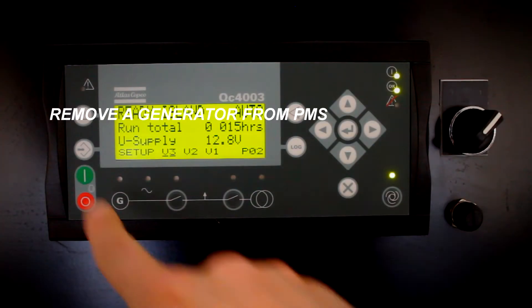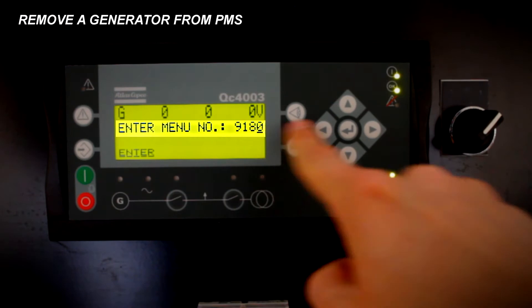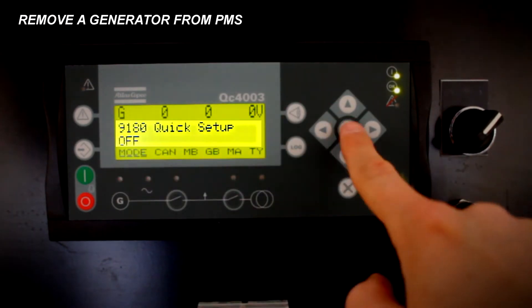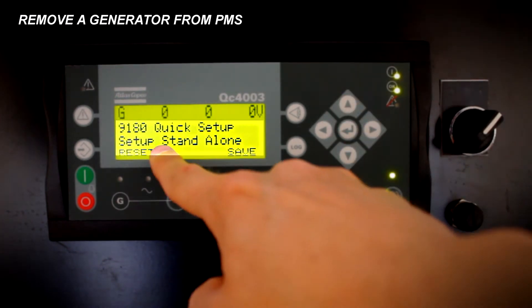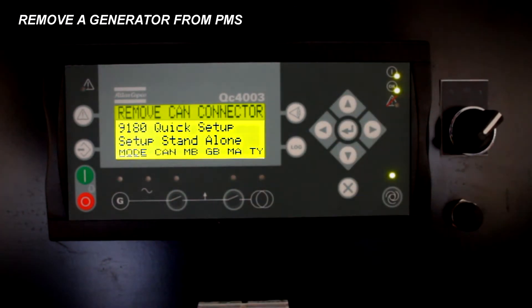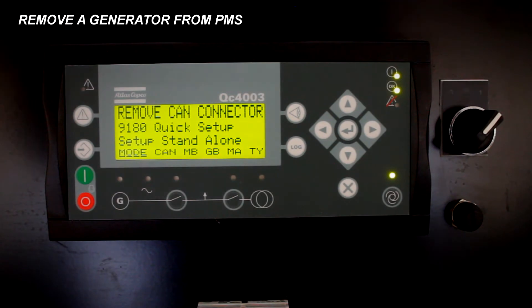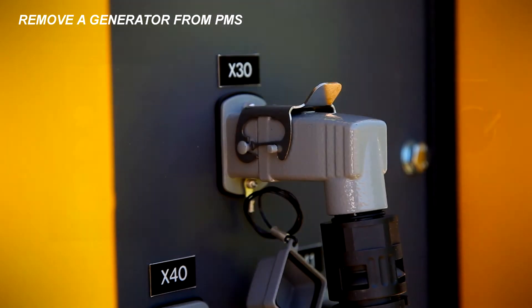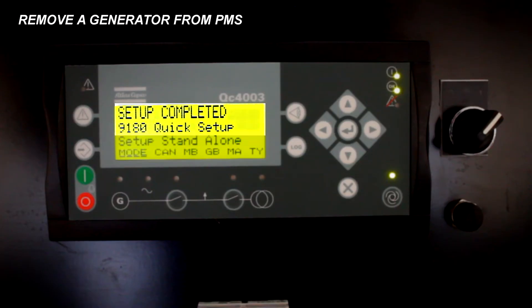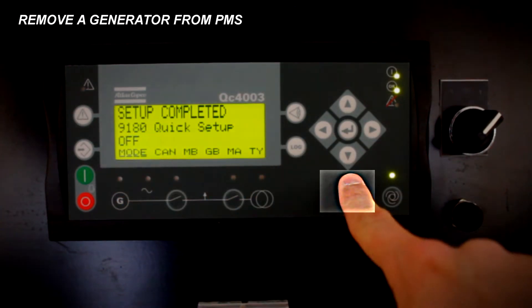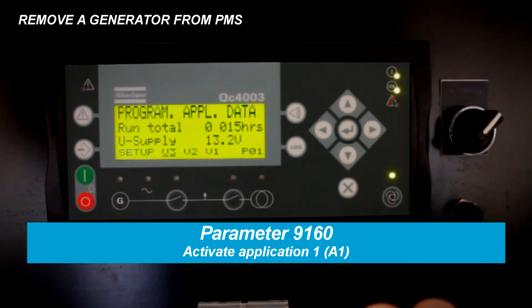We will start from parameter 9180. Proceed to select setup stand alone when requested at the display. Remove the PMS connector from X3O socket. When done, we will get the message setup complete.